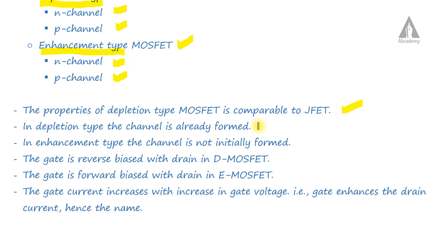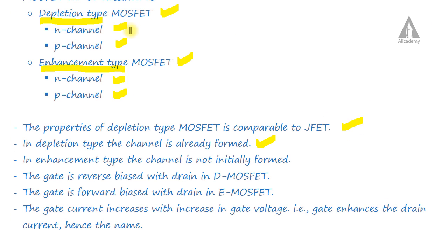In the depletion type MOSFET, the channel is already formed during fabrication. However, in the enhancement type MOSFET, the channel is not initially formed during fabrication — the channel is created during operation.